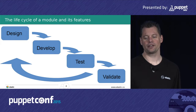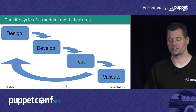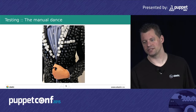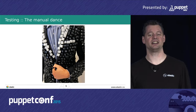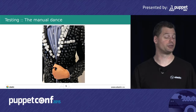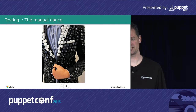For me, the lifecycle when I create a module is that I design something, I develop it, write some tests, and validate if the module actually does what it needs to do. For testing, you can do it all manually — just run some Puppet code, check if the files exist, check if the service is running — but it's tedious, takes a lot of time, and usually means you don't want to spend that time because you want to do cool stuff.